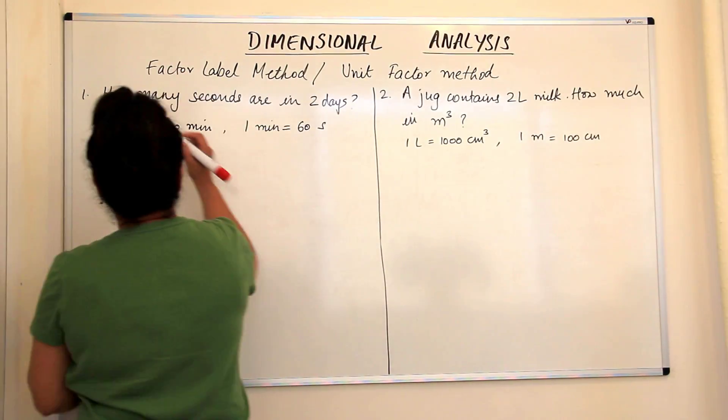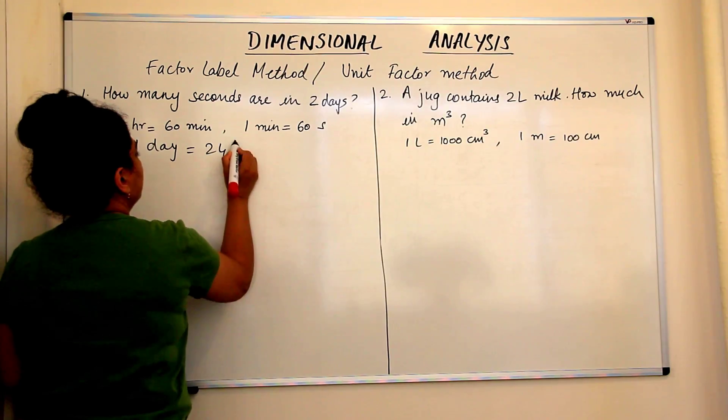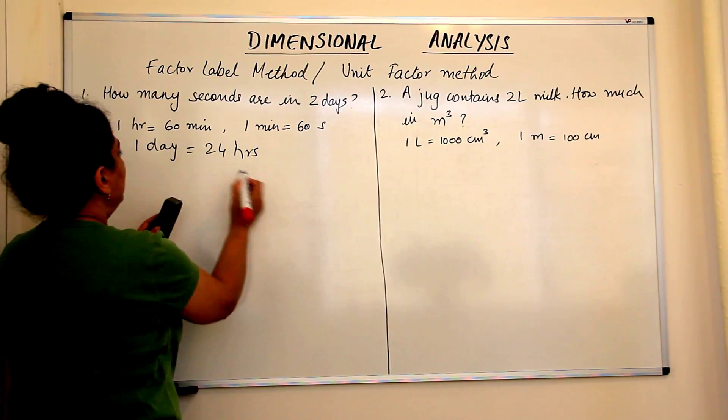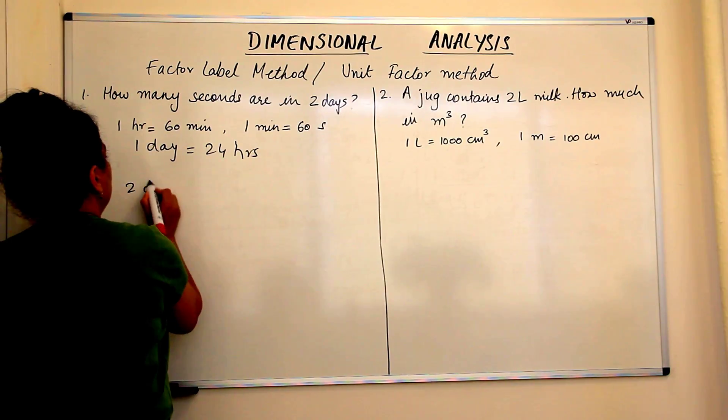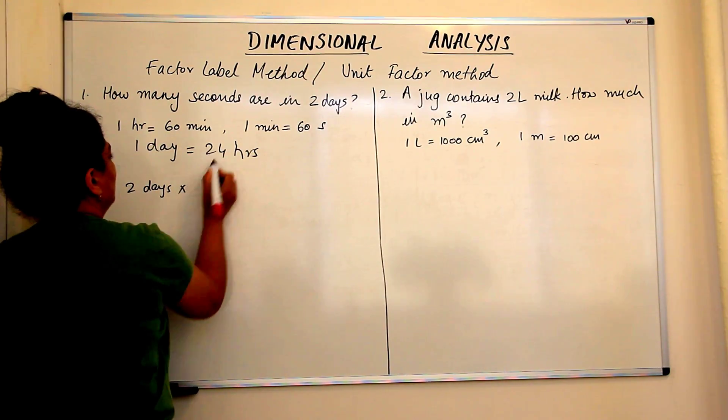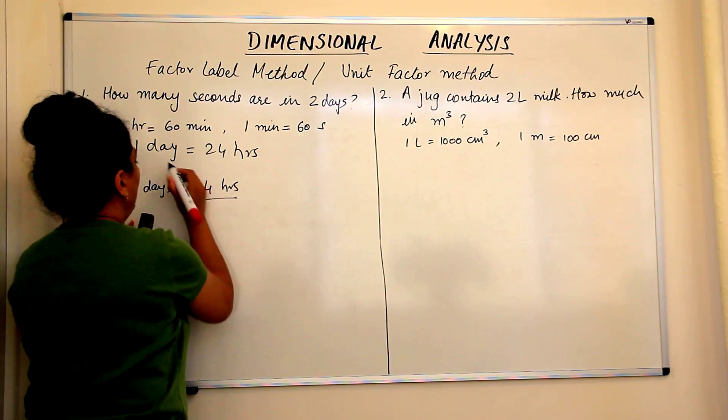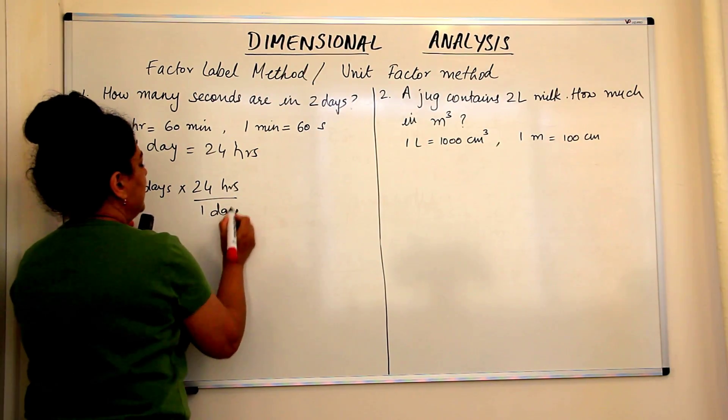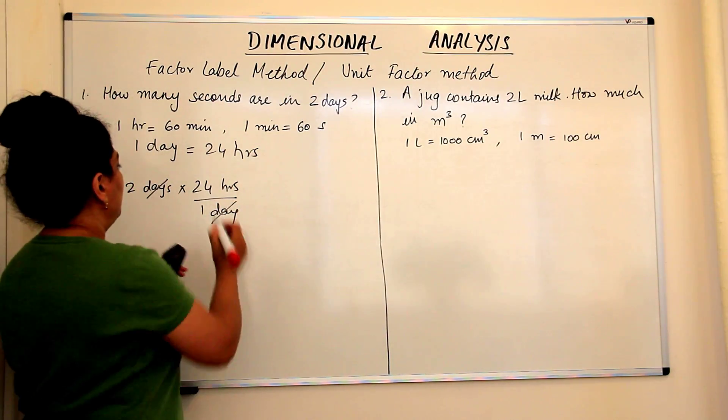One day has 24 hours. So we start with two days. So two days into, the day should come in the denominator. So 24 hours upon one day. Cancel it out so that you are sure that you've plugged in the right value.